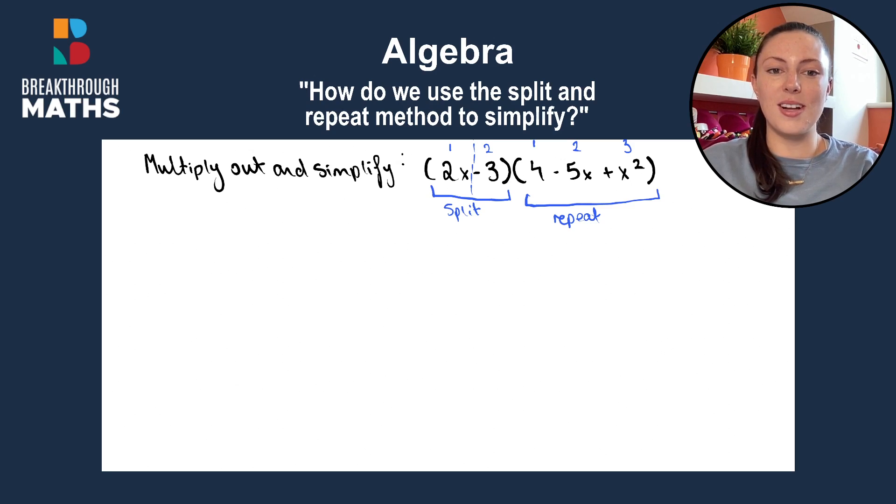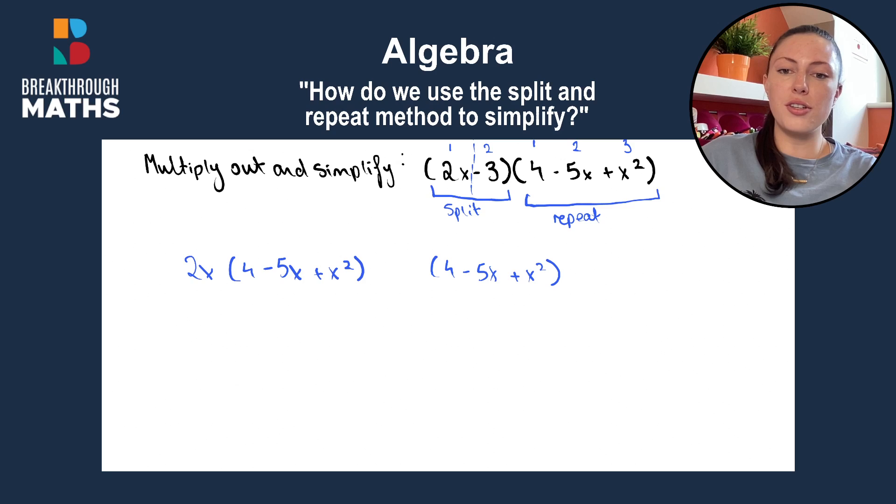So, to show you what this looks like, we repeat out the second bracket twice. So we have 4 minus 5x plus x squared, and we repeat it again. 4 minus 5x plus x squared. And we split our first bracket. So we have 2x in front of the first and minus 3 in front of the second.